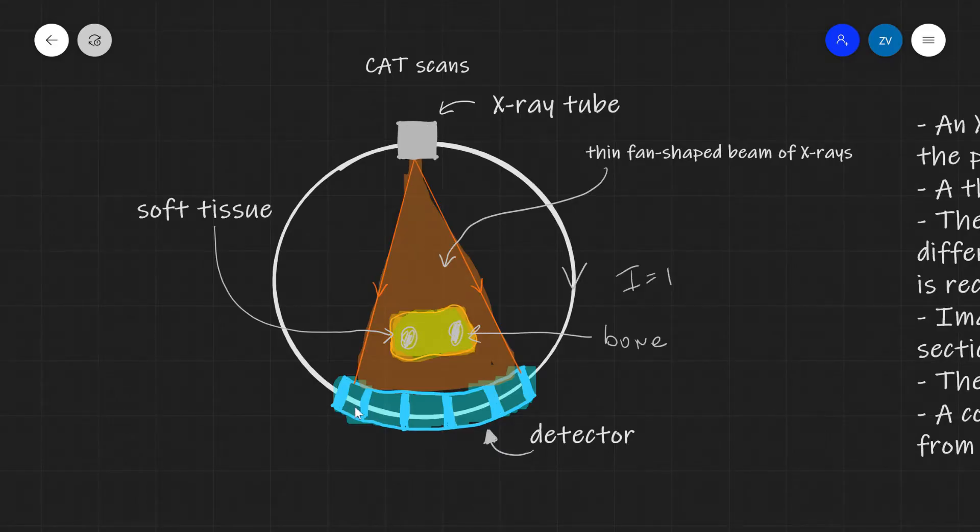The intensity of the x-rays after they have passed through the patient are going to be detected in this detector and this will allow us to take essentially an image of a slice of the patient, of the cross-sectional area.